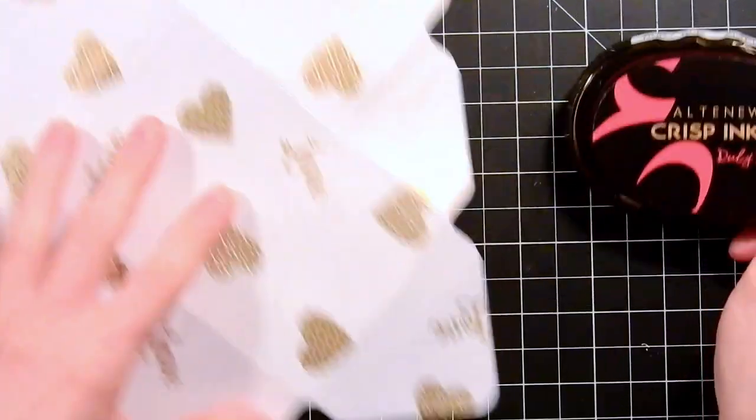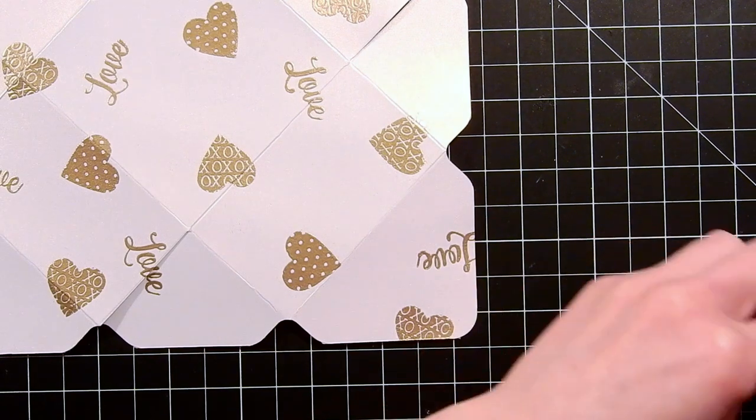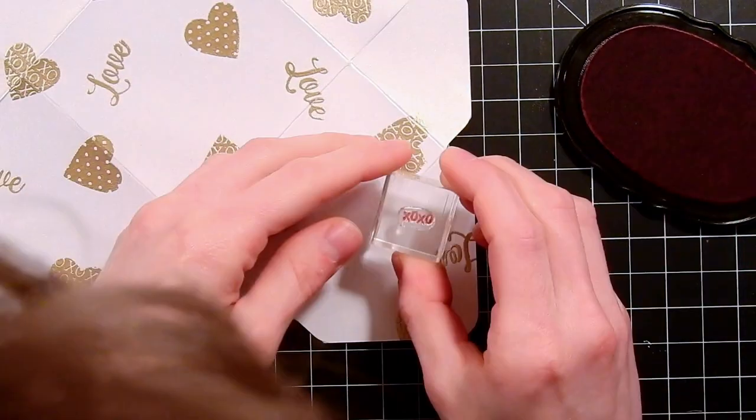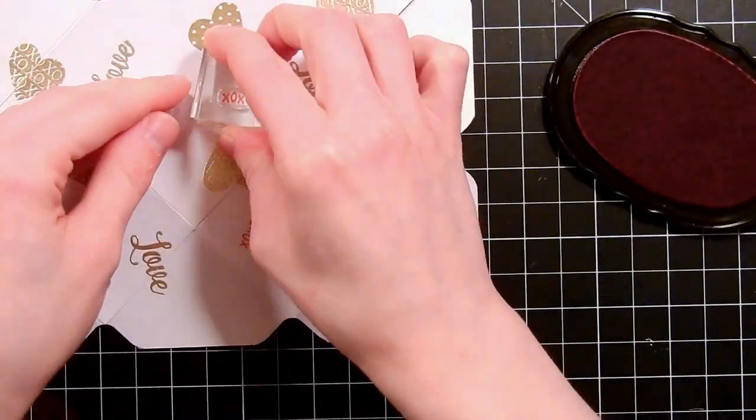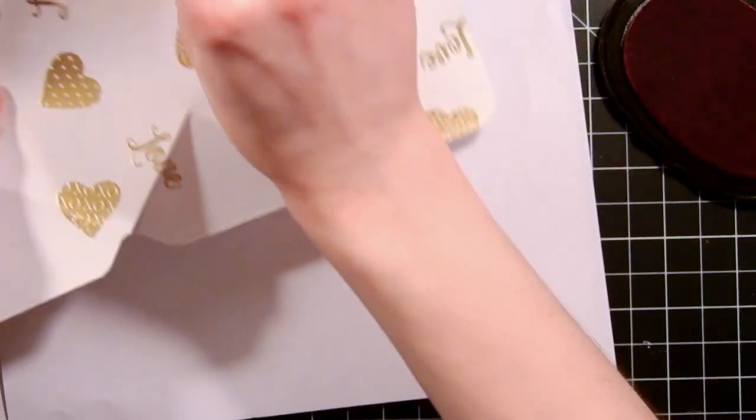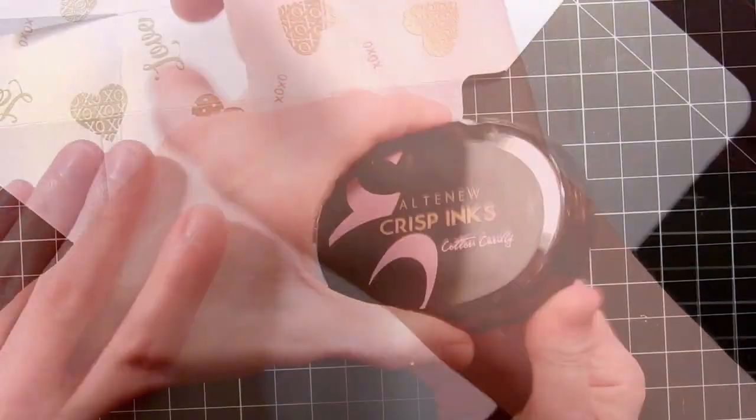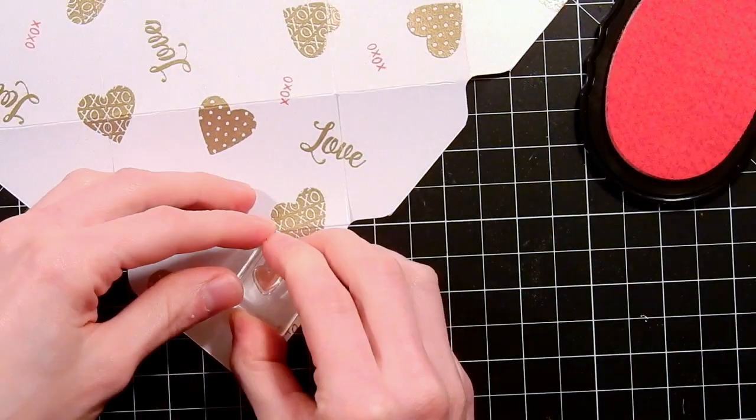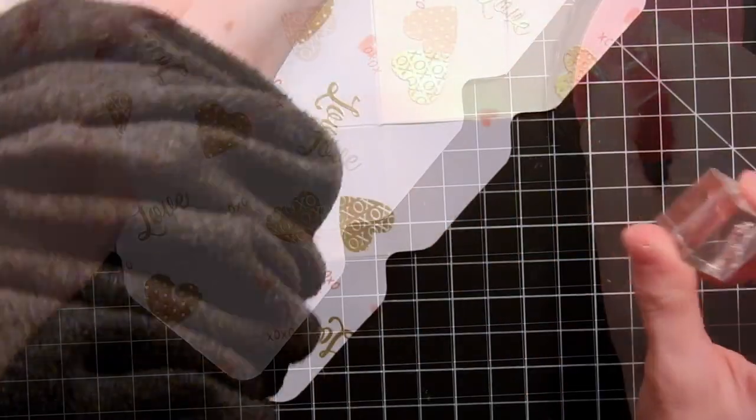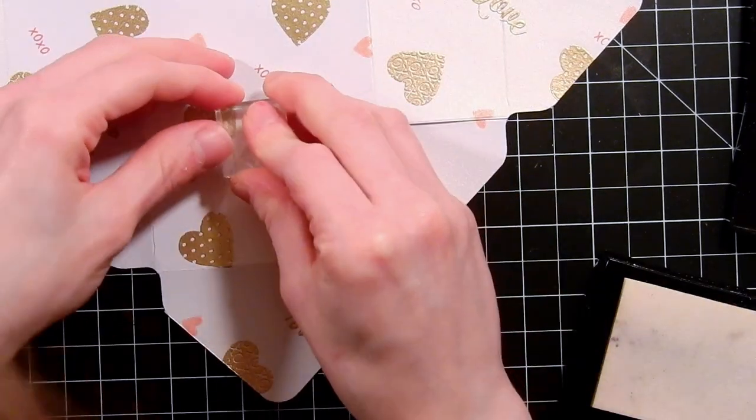Next I'm taking some Altenew dye ink. Now because this is a slick surface this Altenew dye ink is going to be allowing me to heat emboss onto the images that I stamped down. However if you aren't using a slick cardstock like I am you can use a pigment ink and get the same effect. So I'm just heat embossing these with clear embossing powder. I'm going to take some cotton candy dye ink as well and I'm going to do the same thing with some other smaller images. Finally I'm going to take this Be Mine and some more Versamark ink and I'm going to silver heat emboss these.